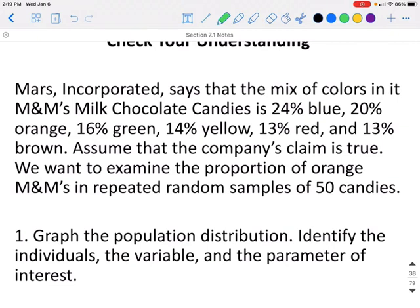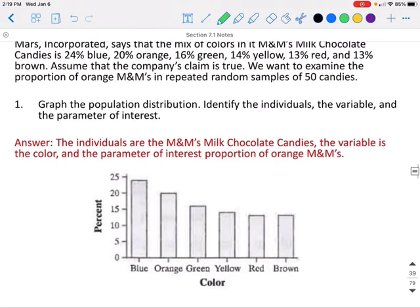Graph the population distribution. Identify the individuals, the variable, and the parameter of interest. Now, we are talking about the entire population, so this is where you would go back to what they say about the entire population. We could graph a histogram that shows of the entire population 24% blue, 20% orange, 16% green, 14% yellow, and 13% red and brown.